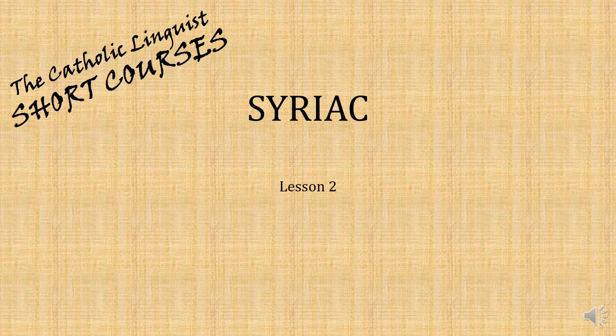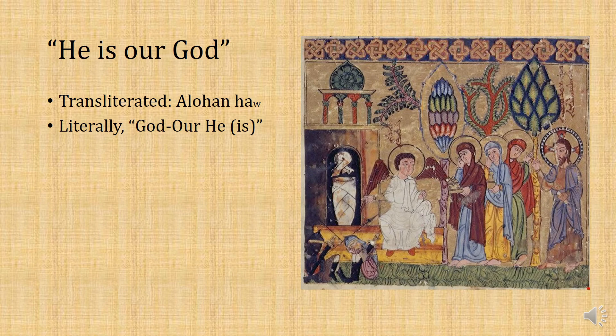Good morning, Linguanauts, and welcome to lesson two of Syriac. Today, our sentence is alohan hau, meaning 'he is our God.' But in Syriac, this is literally just God, our, he.